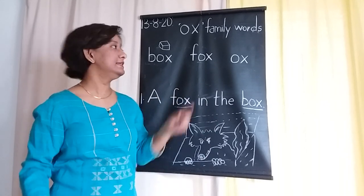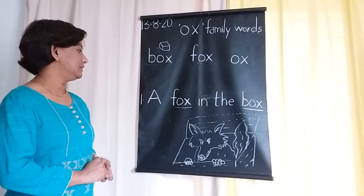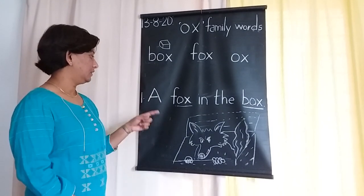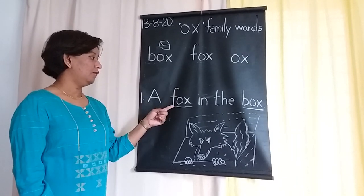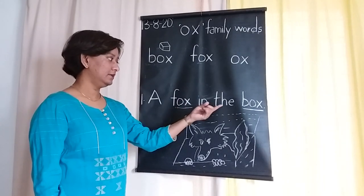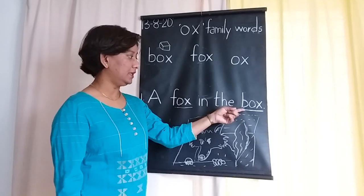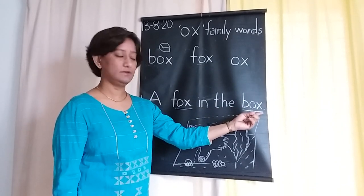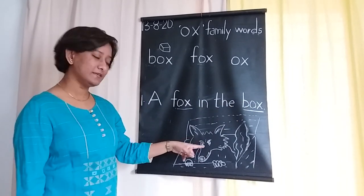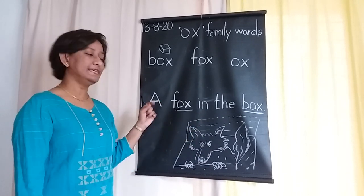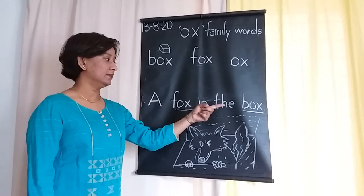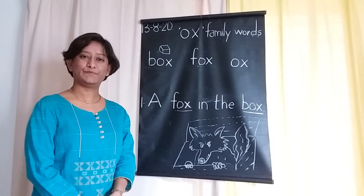Now, using these words we can make sentences. So let's make a sentence. First I'll read it, then you can say it together. A fox in the box. In the picture, can you see a fox who's hiding inside a box? Let's say it together. A fox in the box. Thank you.